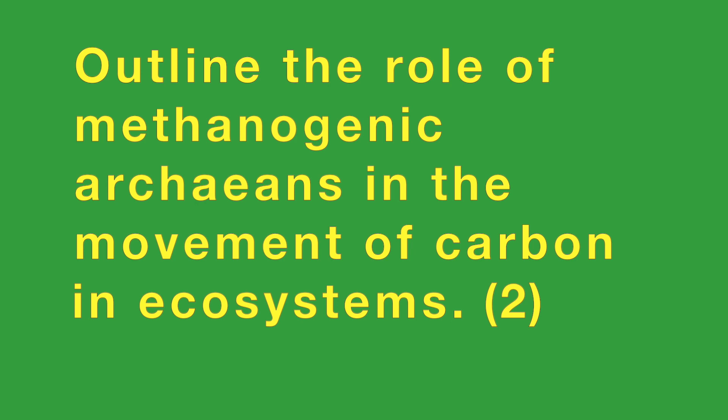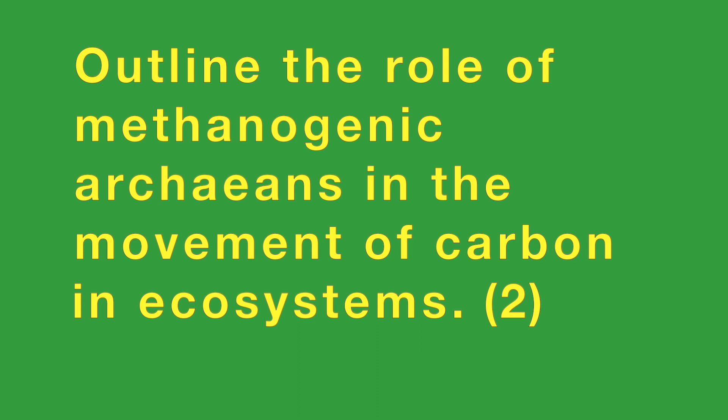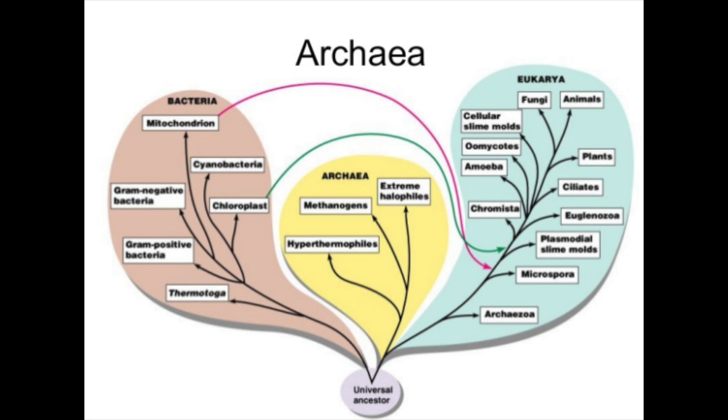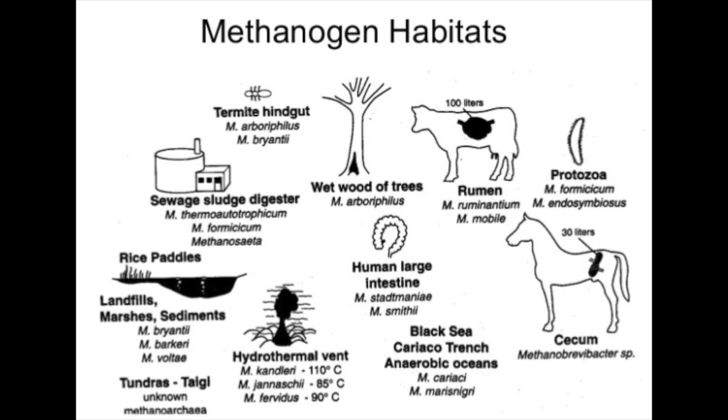This first question comes from the understandings in Topic 4: outline the role of methanogenic Archaeans in the cycling of carbon in ecosystems. The word methanogenic refers to the genesis or generation of methane gas by archaea, a special type of bacteria. They play an important role in releasing carbon from organic matter. It's worth remembering that these methanogens belong to one of the two prokaryotic domains. Here you can see the methanogenic bacteria belong to the group Archaea.